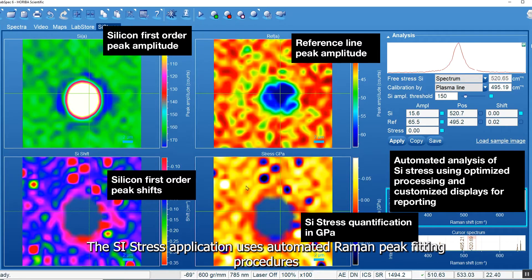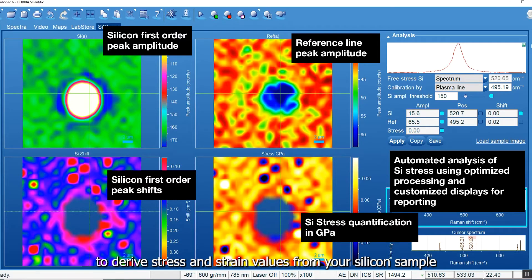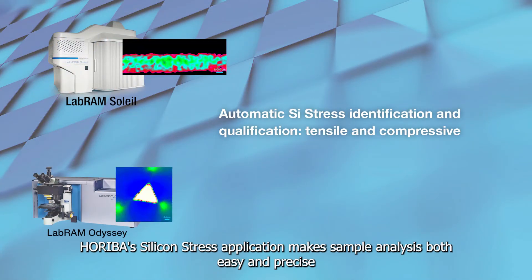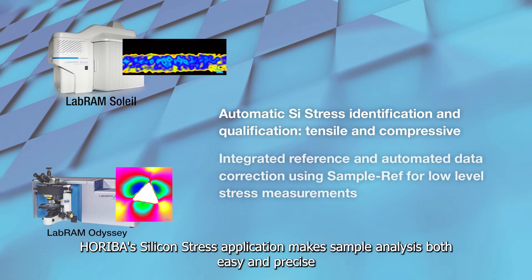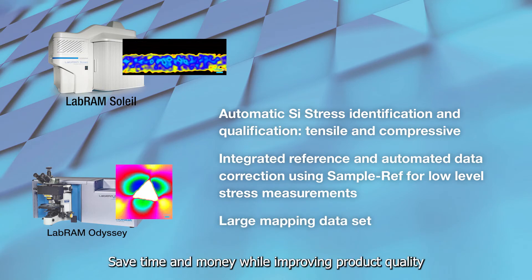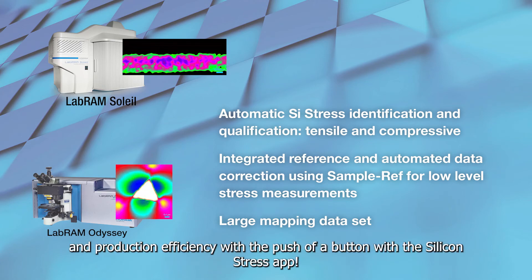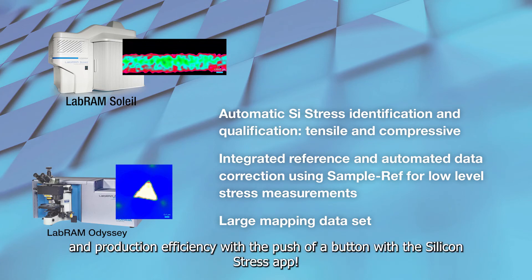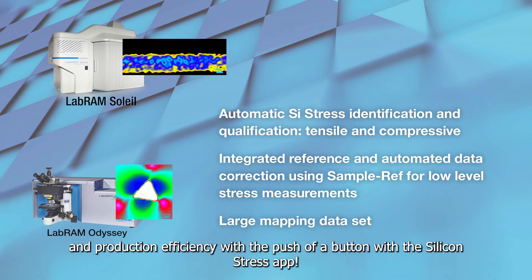The Silicon Stress application uses automated Raman peak-fitting procedures to derive stress and strain values from your silicon sample. Horiba's Silicon Stress app makes sample analysis both easy and precise. Save time and money while improving product quality and production efficiency with the push of a button with the Silicon Stress app.